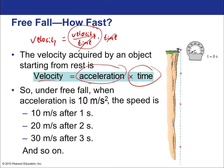Under free fall with acceleration rounded to 10 meters per second squared: the speed is 10 m/s after one second, 20 m/s after two seconds, 30 m/s after three seconds, and so on — it speeds up 10 m/s every second. Since it's speeding up, it covers more distance each second: less in the first second, more in the second, even more in the third, because velocity is growing due to non-zero acceleration.